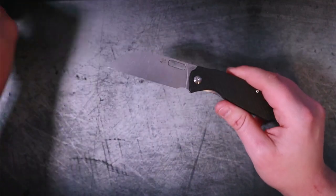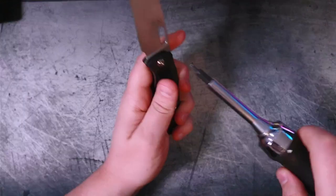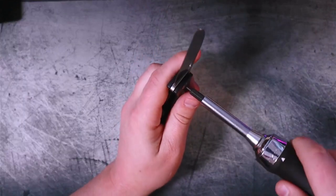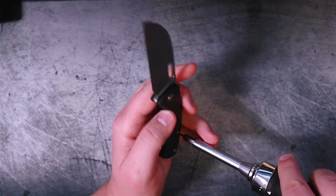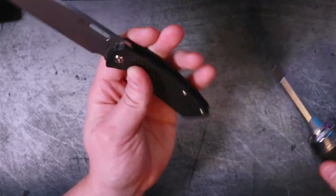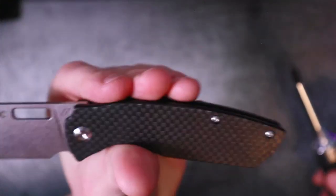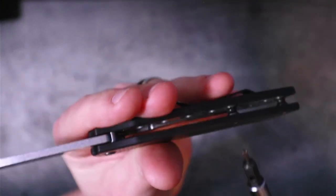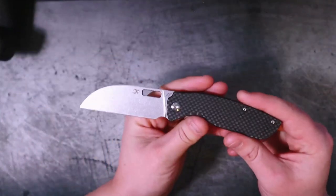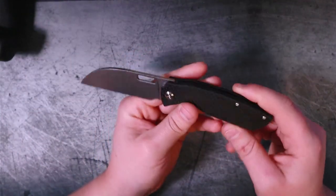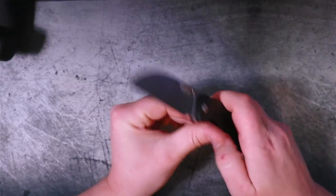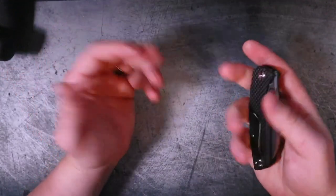Now you might be wondering what about the hardware. Well, let's check the hardware real quick. We've got T8 on the pivot, of course, and we also have—nope, that is T6 on the body screws. That's a shame, I really would have preferred T8. It's not a huge deal, it's just a nitpick. T6 on the body screws, T8 on the pivot, not bad.